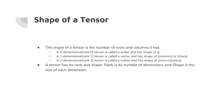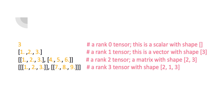To understand the difference between rank and shape better, let's look at some examples. The scalar value 3 is a rank-zero tensor and has a null shape. A one-dimensional vector has a rank of one. If the vector has three elements, its shape is written as [3] — the number within square brackets represents the size of that single dimension.